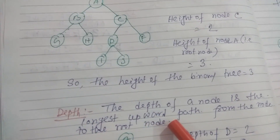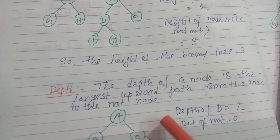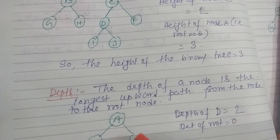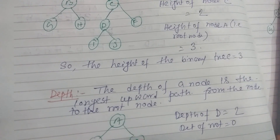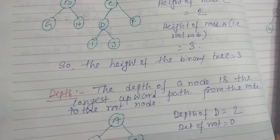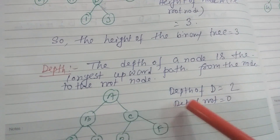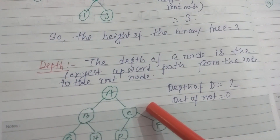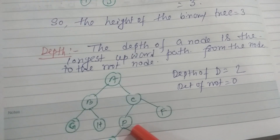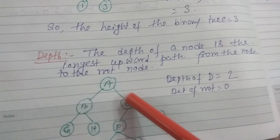Now let us move to depth. The depth of a node is the longest upward path from the node to the root node. In case of height, we move downward from the node to a leaf. But in case of depth, we move upward from the node to the root node. So what is the depth of node D? Moving upward, the longest upward path is 2.